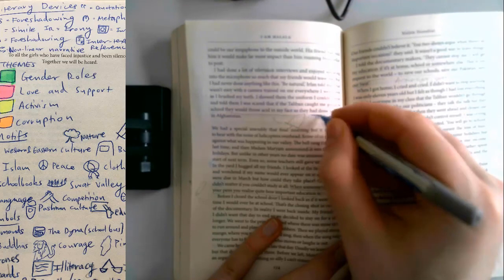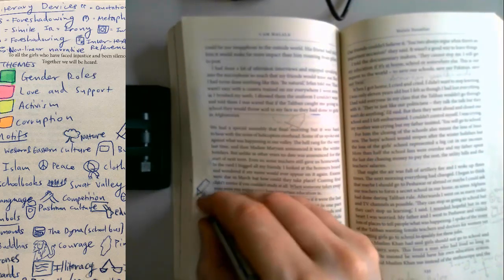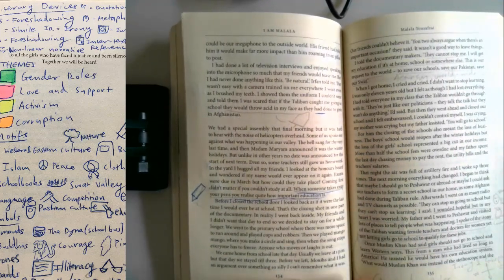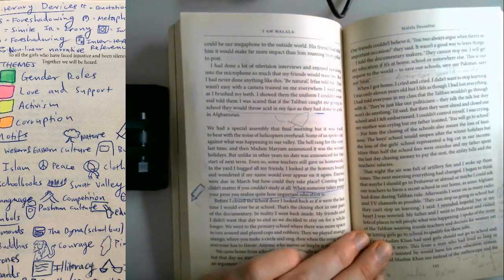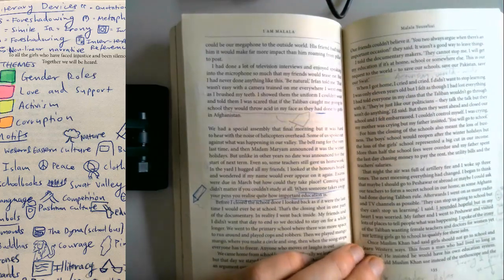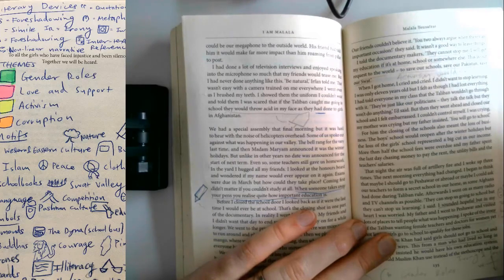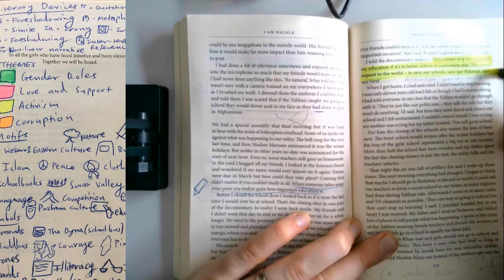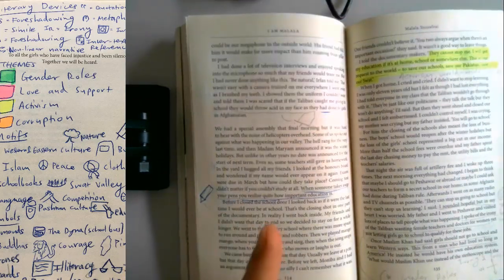We've got some violence here, like always. We've got the pen emerging, which really becomes strong here. When someone takes away your pens you realise how important education is. They cannot stop me. I will get my education if it's at home, school or somewhere else. This is our request for the world to save our school, save our Pakistan, save our SWAT. Activism.